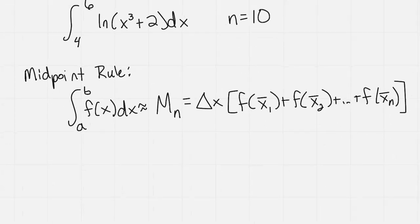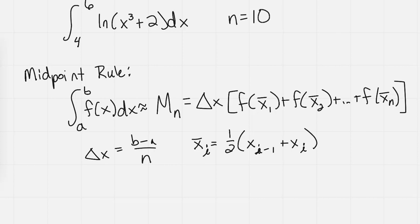We're going to let delta x equal b minus a over n, and our x bar sub i will be equal to one half of x sub i minus 1 plus x sub i. So it's that midpoint of our x sub i minus 1 and x sub i.